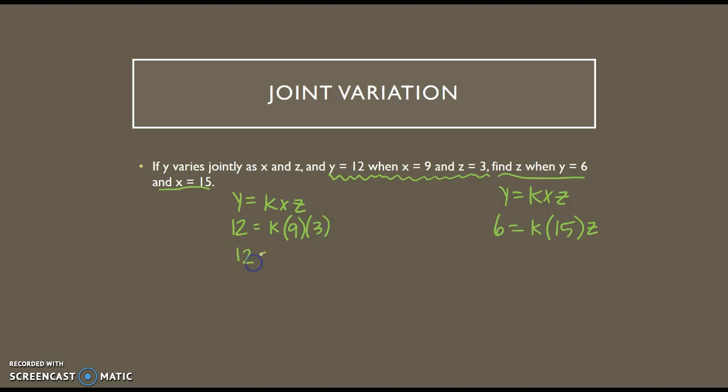All right, so I get 12 equals 9 times 3 is 27. To get k by itself, I'm going to divide by 27. 12 does not divide by 27 evenly, but I can simplify it. 3 goes into both of those. So my k ends up being 4 ninths.